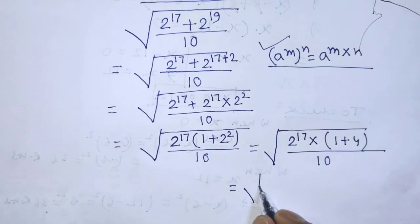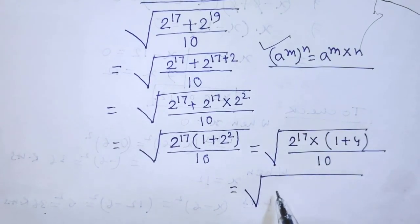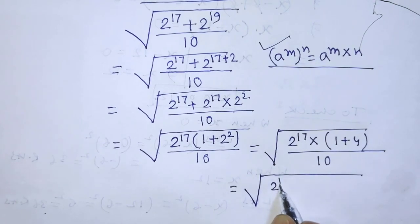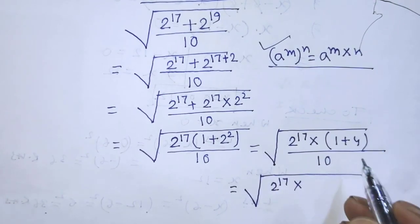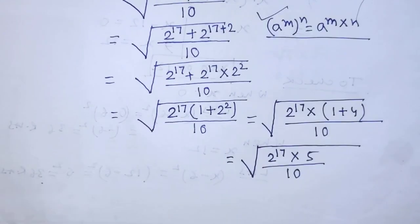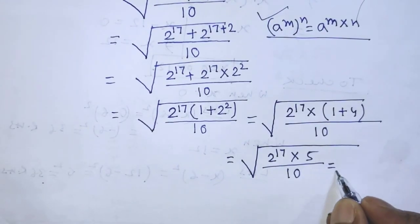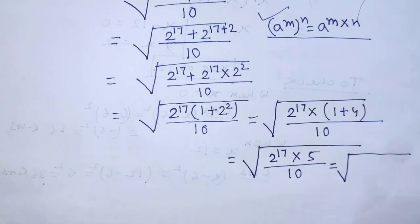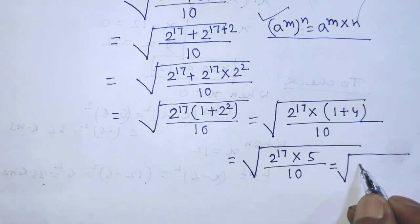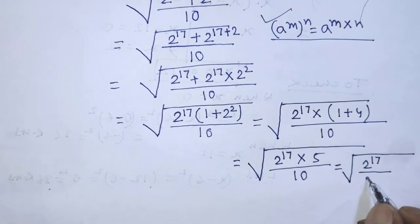After that, we have to write square root, and inside this square root, in the place of numerator we have to write 2 to the power 17 times — 1 plus 4, that is 5 — over 10. After calculation, inside the square root we get 2 to the power 17 over 2.